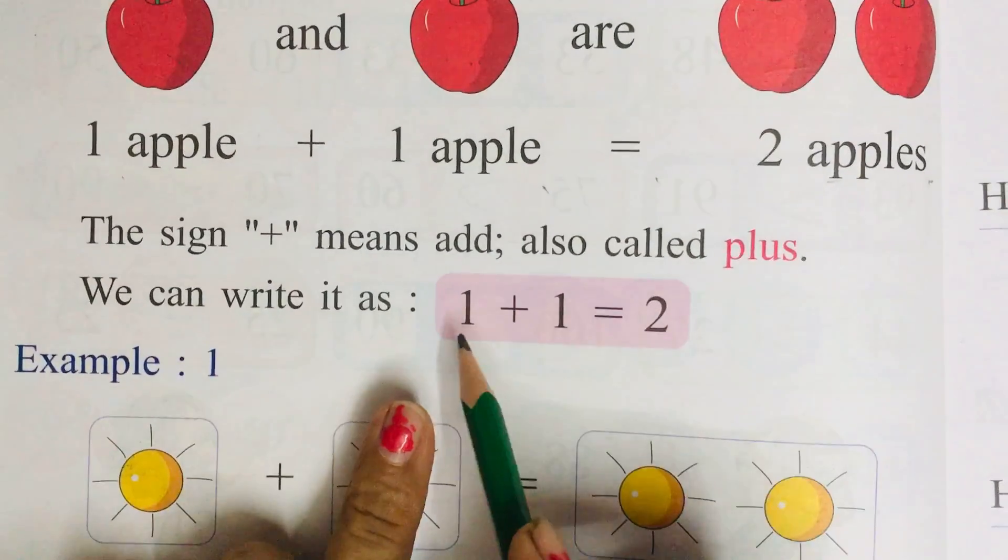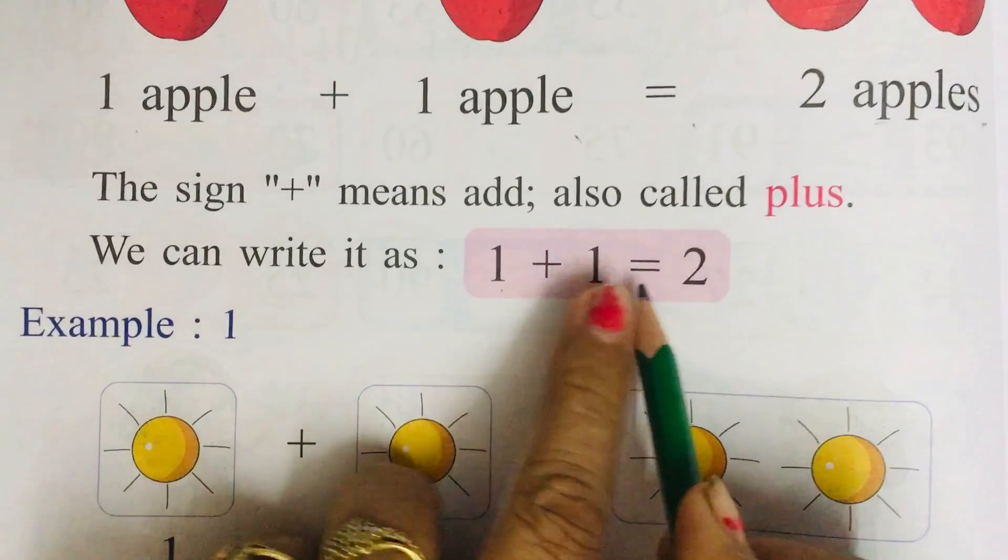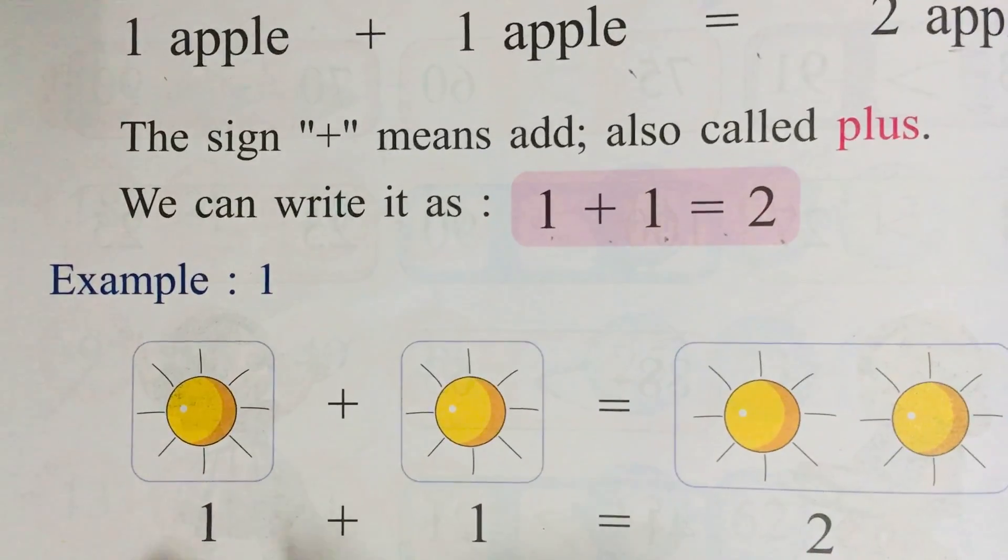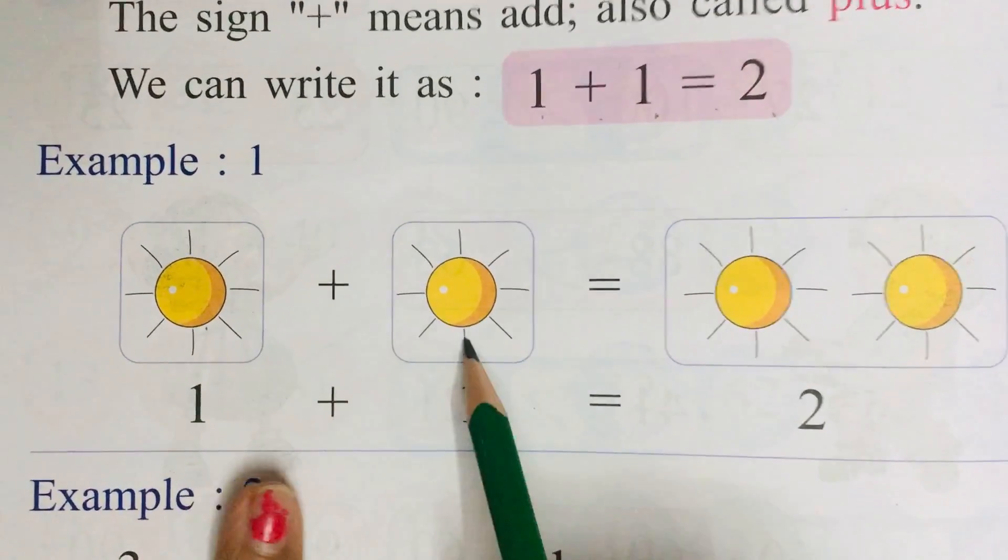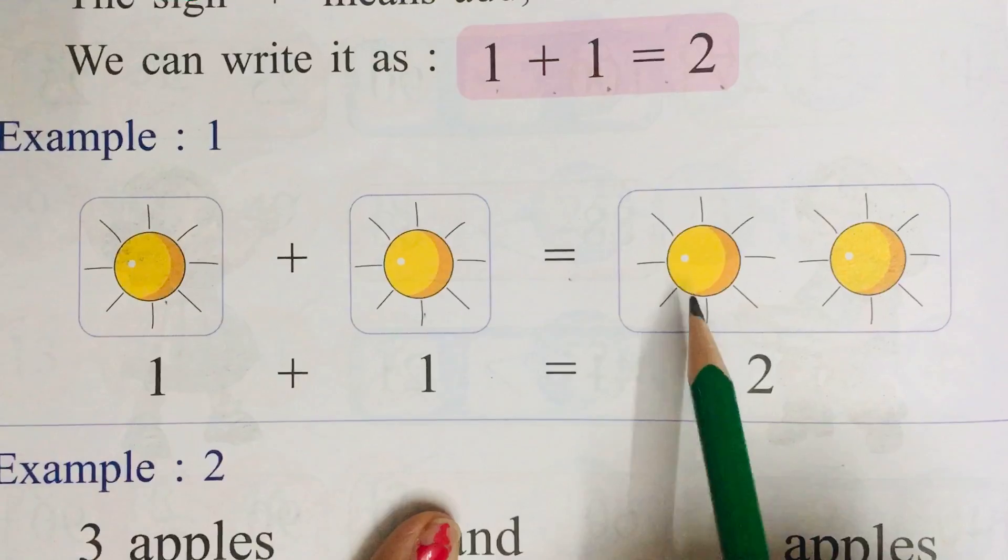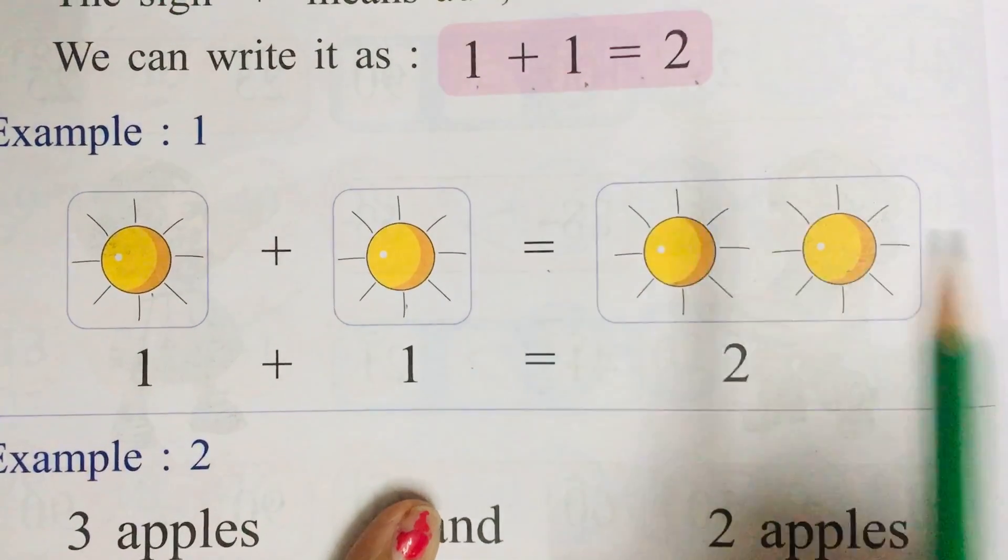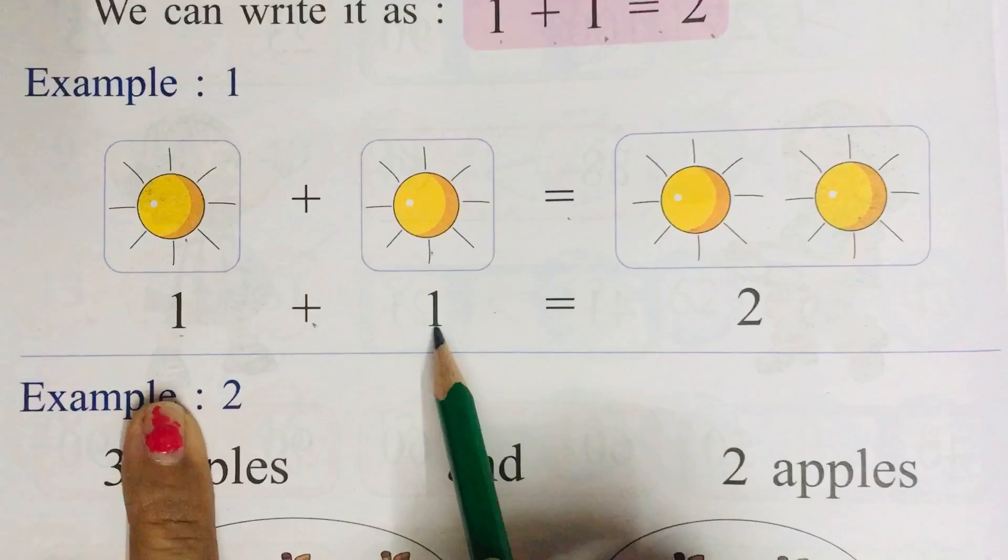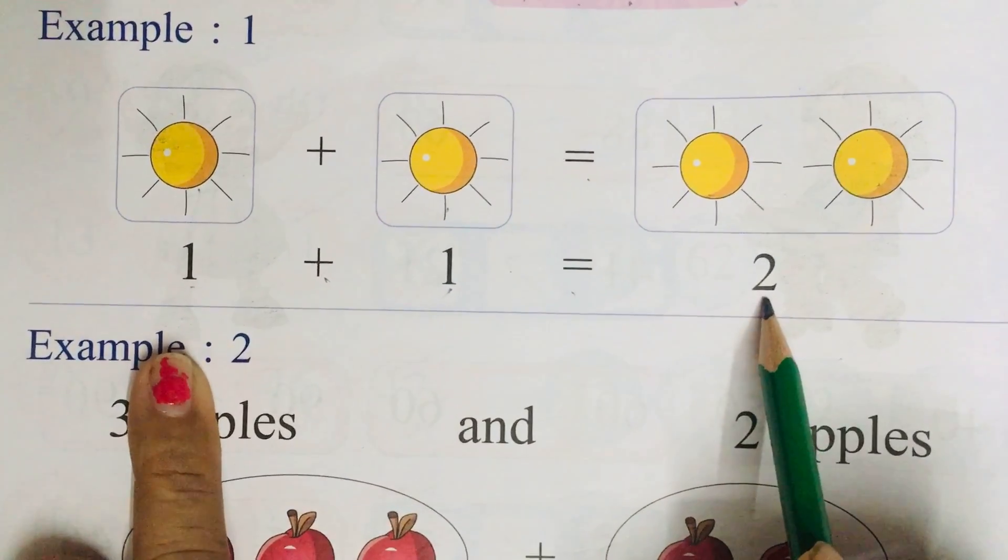So how can we write? 1 plus 1 equals to 2. See, 1 plus 1 equals to 2. 1 plus 1 equals to 2.